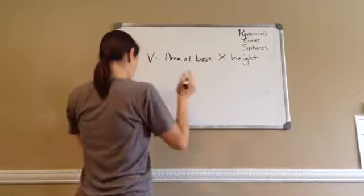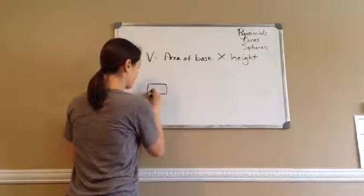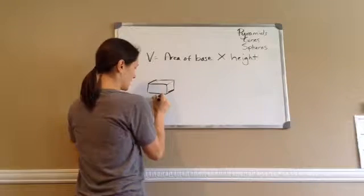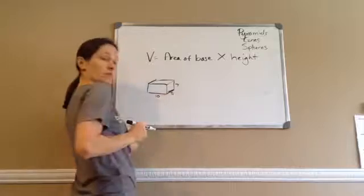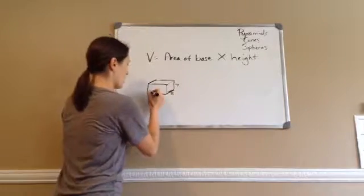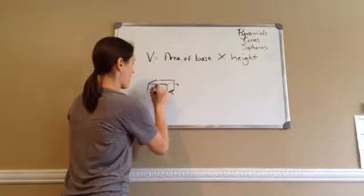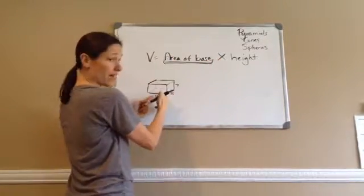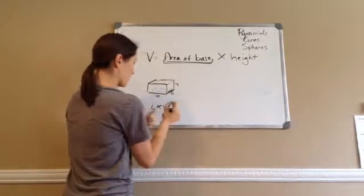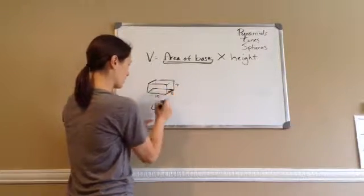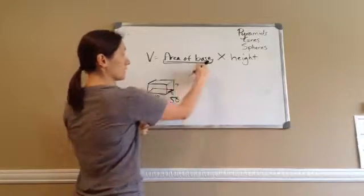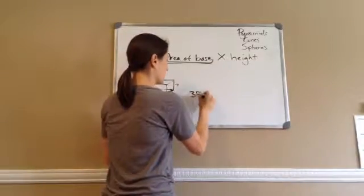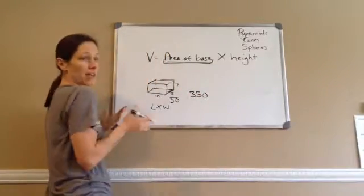For example, let's do a quick one. Let's say this was 10, 5, and 7. My base is a rectangle, so the area of the base would be length times width, which is 50. Then times the height would be times 7, so 50 times 7 would be 350. That's how you would find the volume.